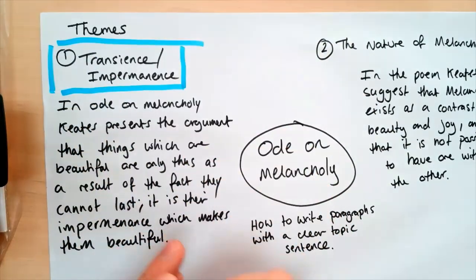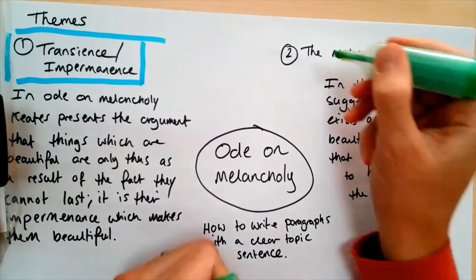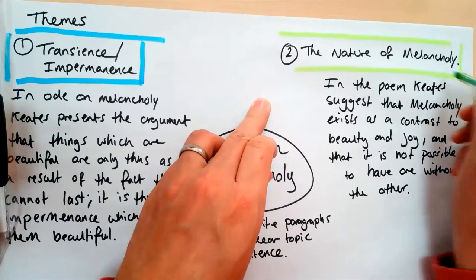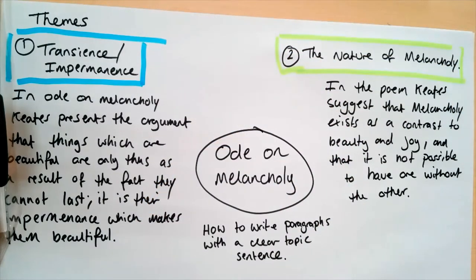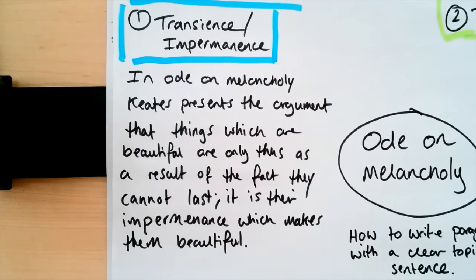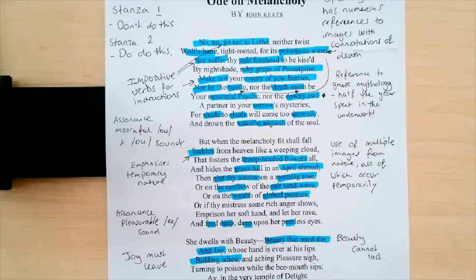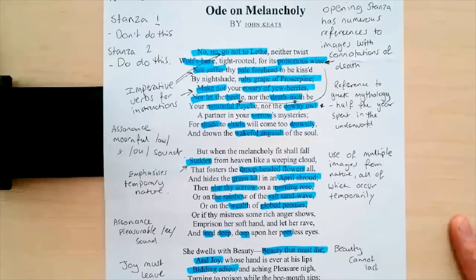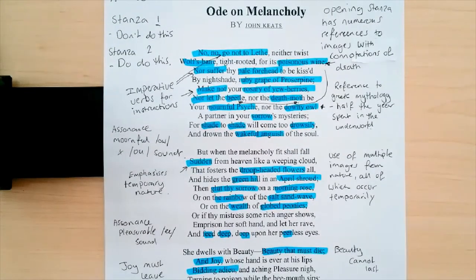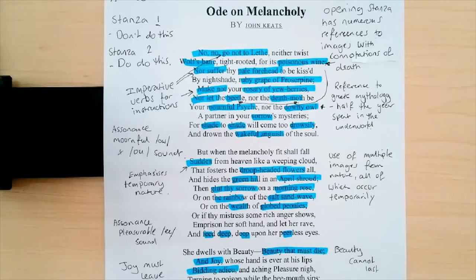What I'm going to do now is annotate the poem, highlighting the quotations linking to the different themes in the colours shown here. Here I've highlighted all the quotations in blue that I think are relevant to the theme of transience and impermanence. I haven't highlighted all the quotations from the poem that I could use — I've just stuck to ones that I think are really relevant to this topic sentence and that I can use to form a really focused paragraph. I've also made some annotations about how I might want to analyse them or include them in my paragraph.